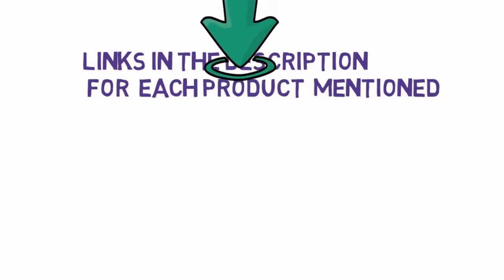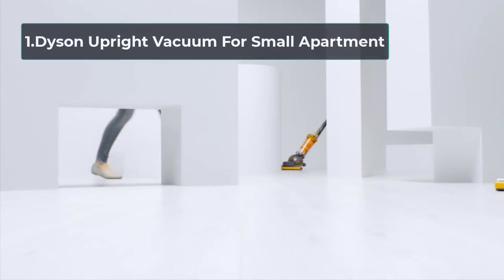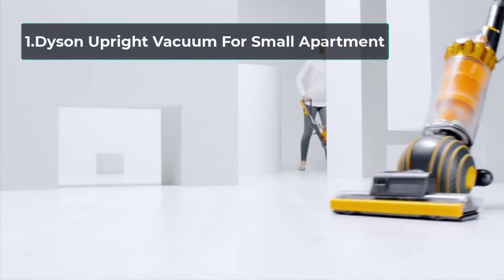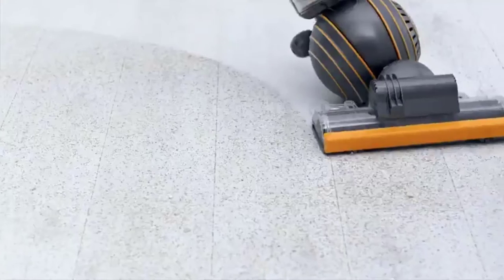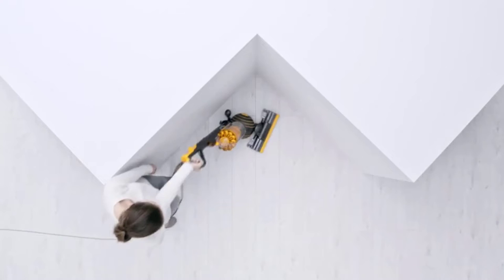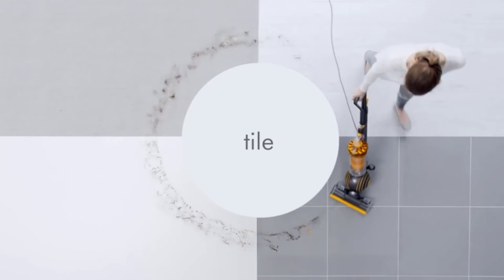Starting number one: Dyson Upright Vacuum for small apartment. The Dyson upright vacuum is equipped with a 32-foot power cord and the maximum length of this vacuum can reach 40 feet. Such an impressive length, you can clean anywhere you want without worrying about the limited cord length. The strong suction allows you to clean any messes on various floors.